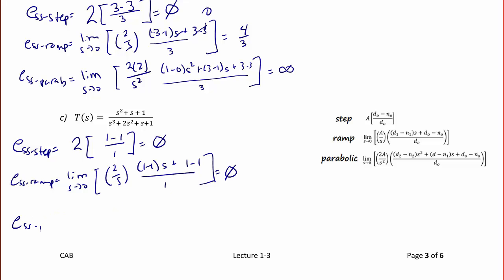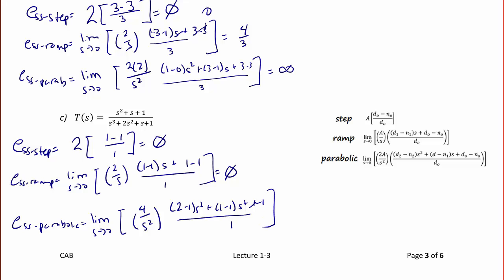For the parabolic input, we have the limit as s approaches 0 of (4/s²) times [(d2 - n2)·s² + (d1 - n1)·s + (d0 - n0)] / d0, which is [(2 - 1)·s² + (1 - 1)·s + (1 - 1)] / 1. We get a 0 here, a 0 here, and a 1 here. The s² terms do cancel out, so we end up with a steady state error of 4 for a parabolic input. This closed-loop transfer function does track a parabola.